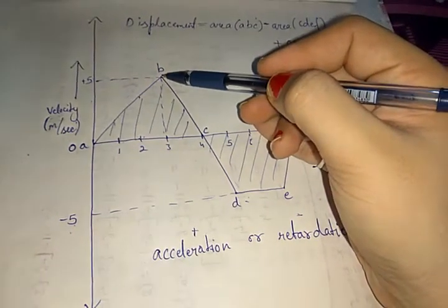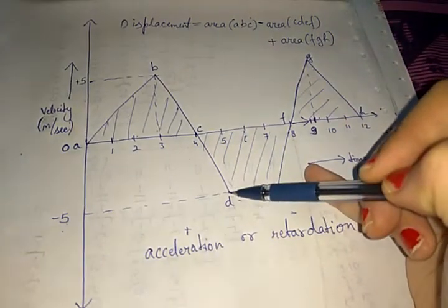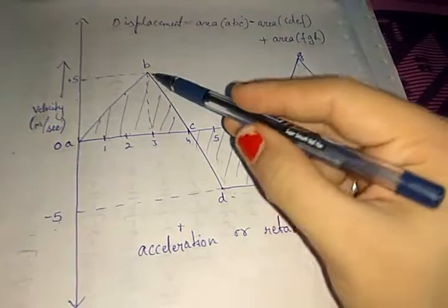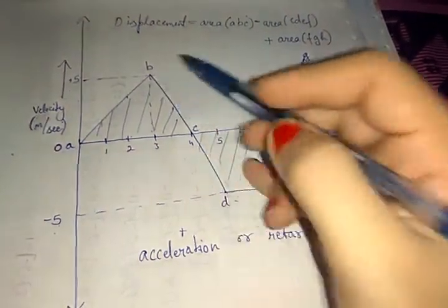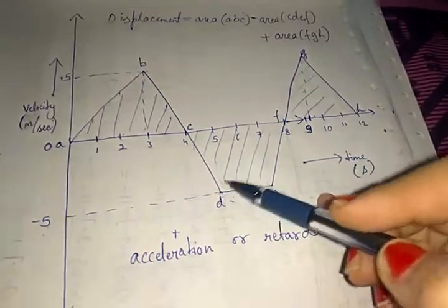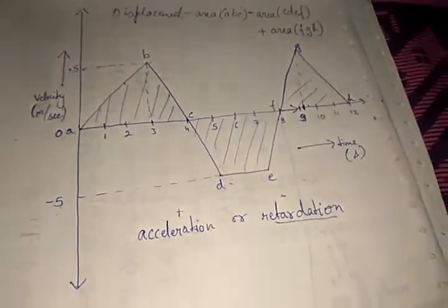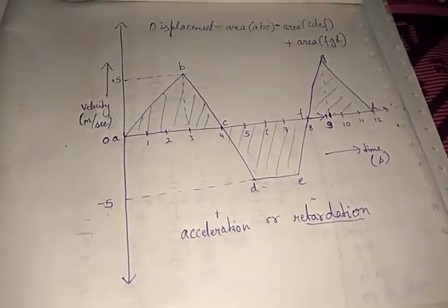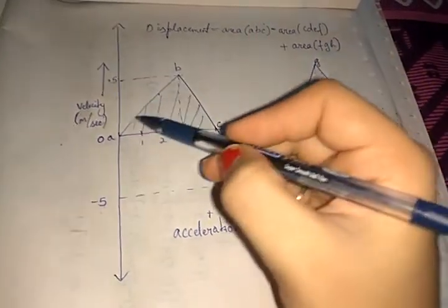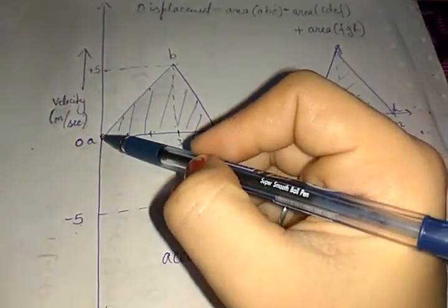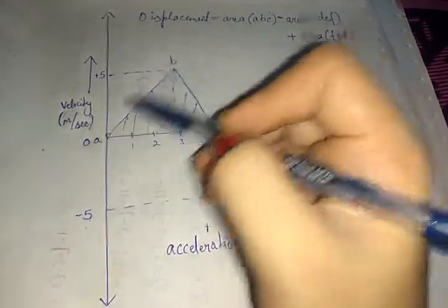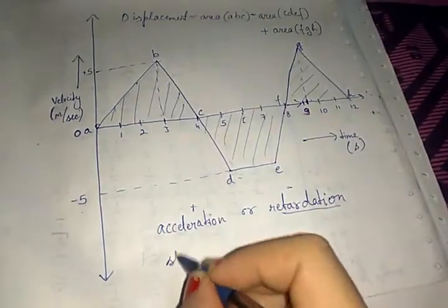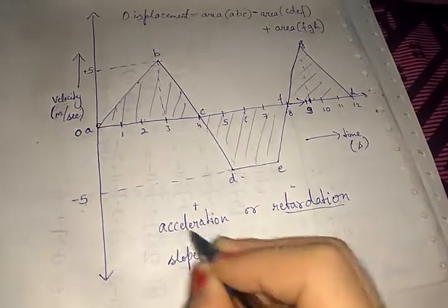In this graph, the velocity was first plus 5, then after decreasing it becomes minus 5. From B to D the initial velocity was plus 5 and final velocity is minus 5 — the velocity is decreasing, so this is retardation. To find acceleration or retardation, you need to find the slope of the graph. From A to B the velocity is increasing, so the slope of AB gives acceleration.